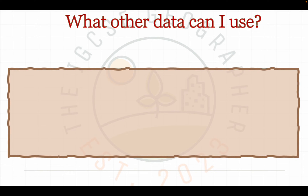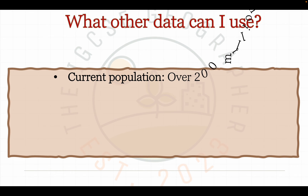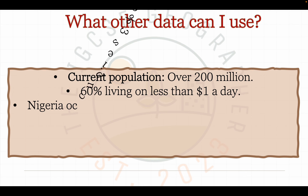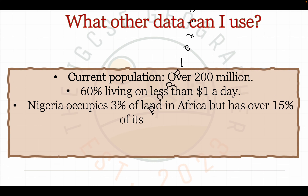To truly show your examiner you know your geographical knowledge of Nigeria's overpopulation crisis, the use of data is a must. As the theme is population, demographic data such as population size, birth rate, or natural population increase would help strengthen your answer. Some examples you may wish to include are its current population size, which is over 200 million people; that 60% of its population live on less than $1 a day; and to put its overpopulation crisis in perspective — Nigeria occupies 3% of land in Africa but has over 15% of its population.